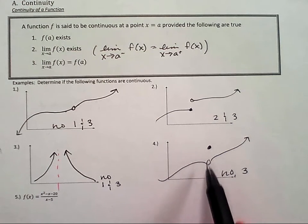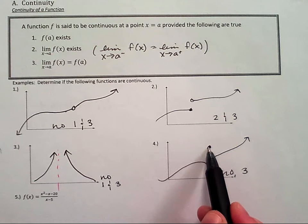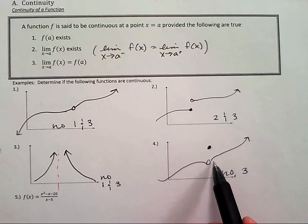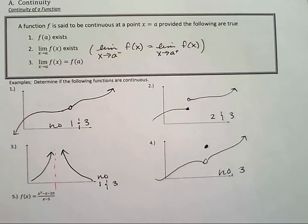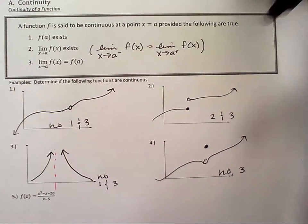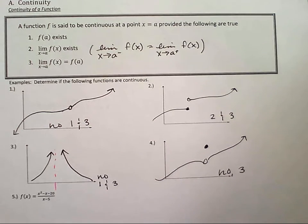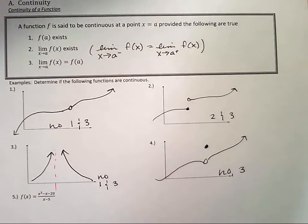Number three. Good. The limit, or f(a) exists. It's right here. The limit from the left equals the limit from the right. But the limit from the left and the limit from the right do not equal the functional value. So no on three, right? Okay, what do you guys think about number five? Is this function continuous?